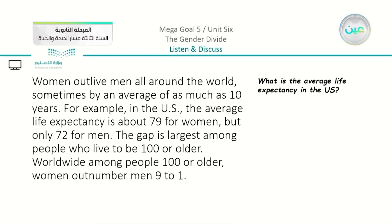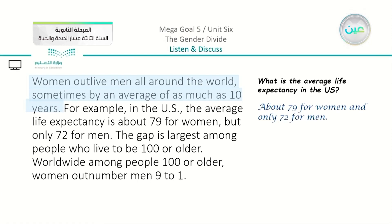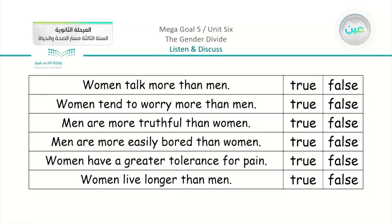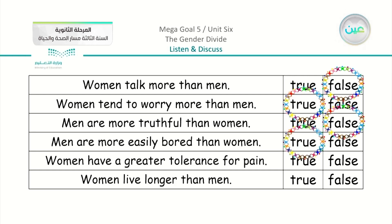What is the average life expectancy in the US? It is about 79 for women and only 72 for men. Now let's check our true/false answers: first statement — women talk more than men — is false. Second — women worry more — is true. Third — men are more truthful — is false. Fourth — men are more easily bored — is true. Fifth — women have greater tolerance for pain — is false. Sixth — women live longer — is true.